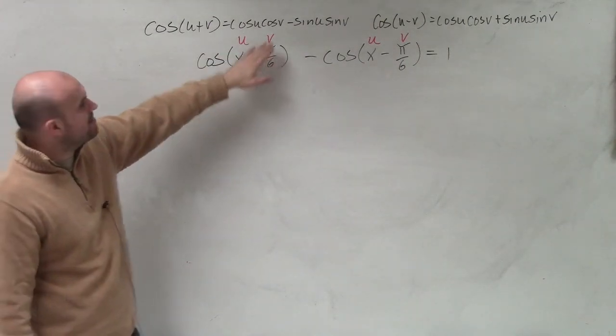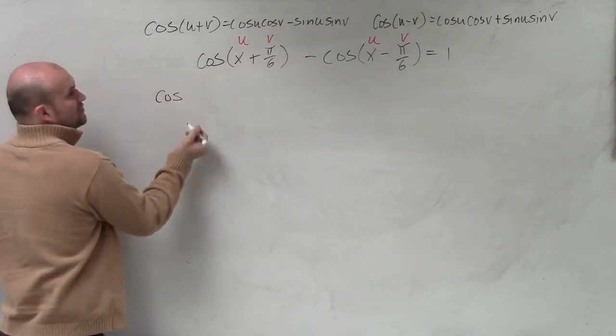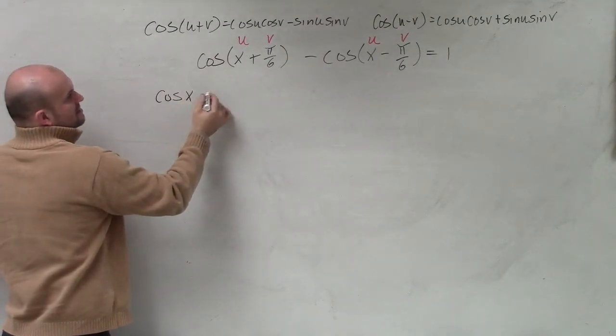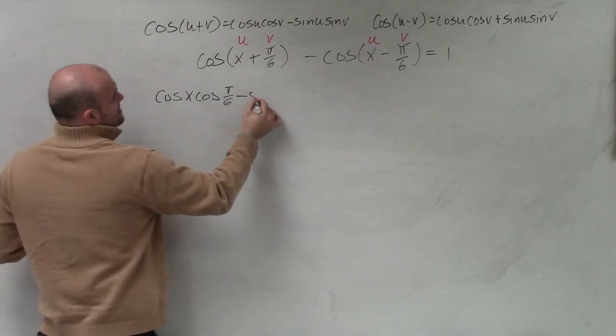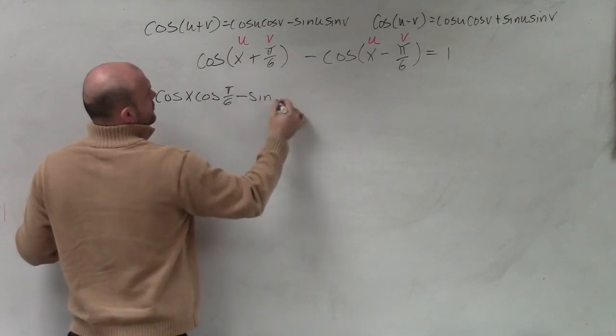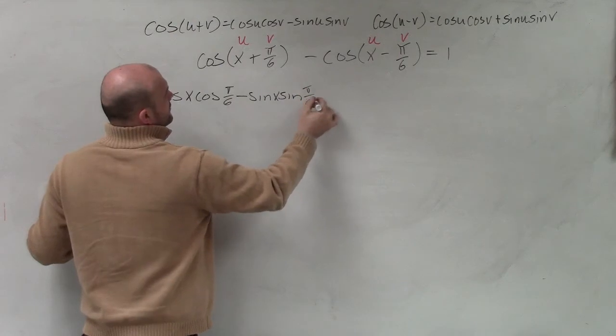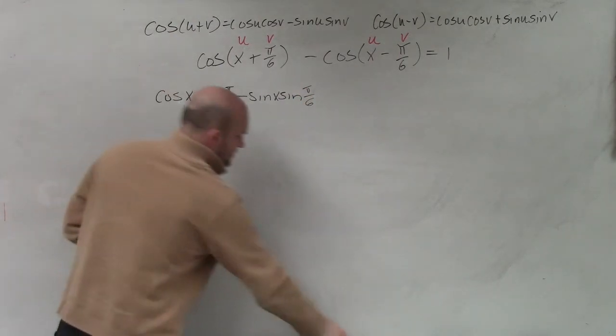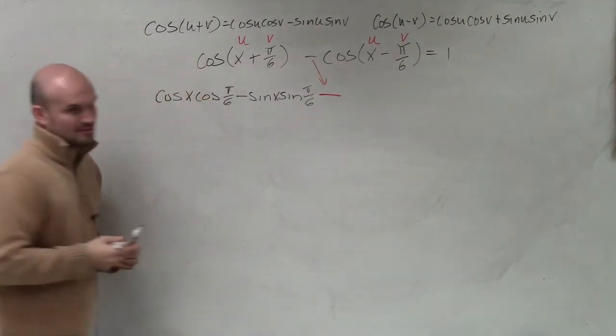Since this is the sum, I'm going to use that formula. So cosine of u, well, u in this case is x, times the cosine of π over 6, minus the sine of u, which is x, times the sine of v, which is π over 6, right? Minus that minus sign.